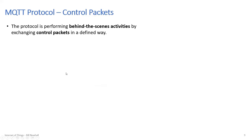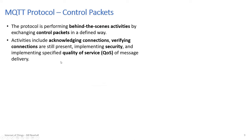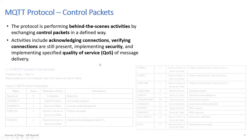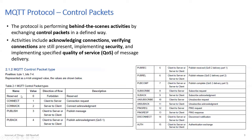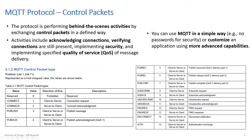The protocol performs a lot of behind-the-scenes activities: acknowledging connections, verifying connections are still present, implementing security, and implementing a specified quality of service. There are many different control packet types in the standard: Connect, ConnAck, Publish, Subscribe, SubAck. You can use MQTT simply with no passwords, or customize an application using the more advanced capabilities depending on the quality of service or security features you need.